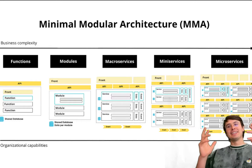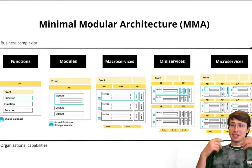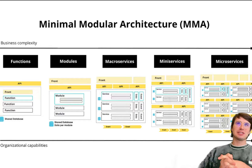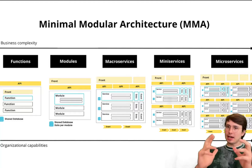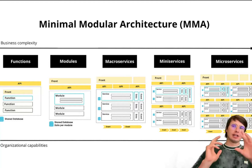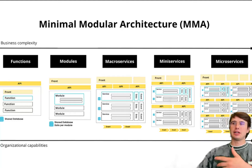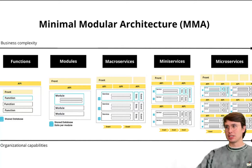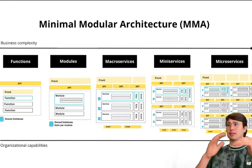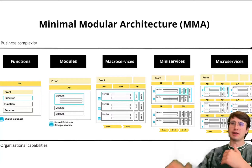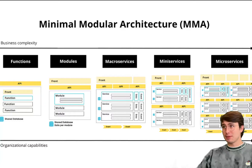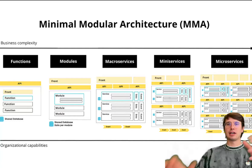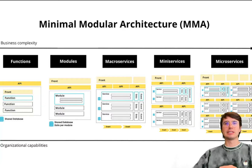Hey y'all, DataGuy here, and today I decided to make a video breaking down some of the most common data architecture concepts. We're going to be going through things like modularity, abstraction, encapsulation, layering, brownfield versus greenfield projects, event-driven architecture, single versus multi-tenant, and tightly versus loosely coupling — basically a full rundown of all the different architecture terms you might need to know when first getting started in data.